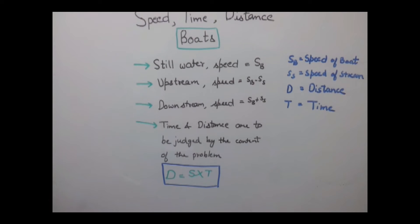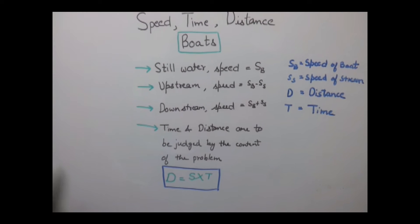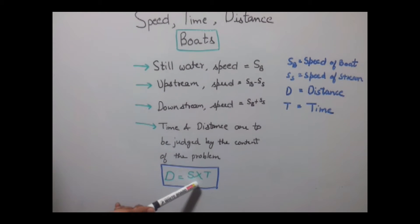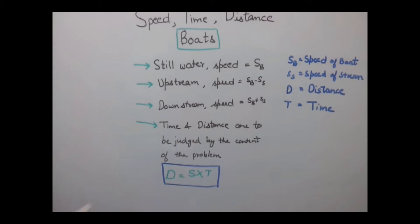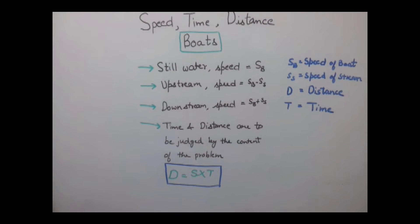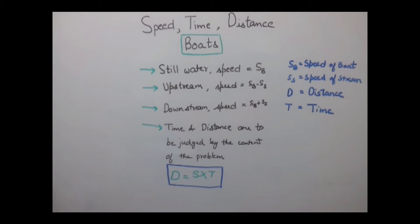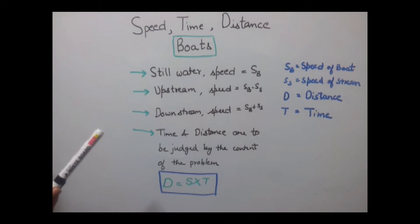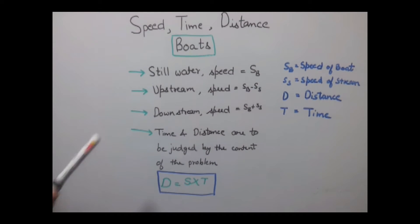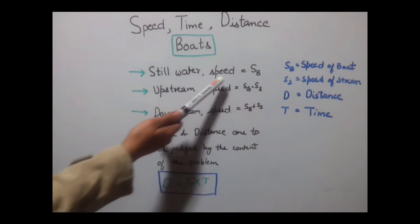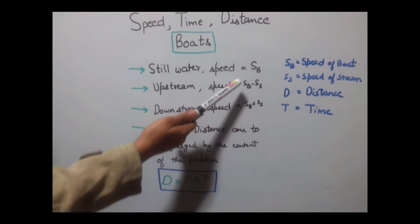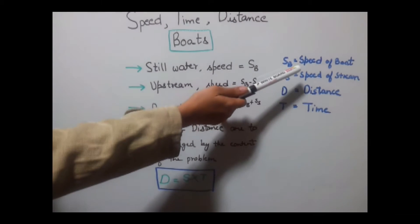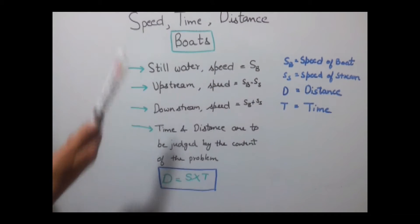The basic formula in problems related to boats is: distance equals speed into time. Now there are some conditions. The first case can be still water — if the water is still, the speed is denoted by SB, where B represents the speed of the boat.